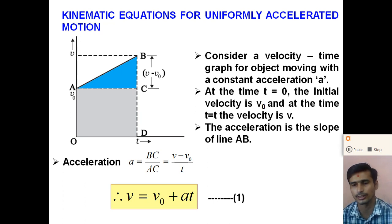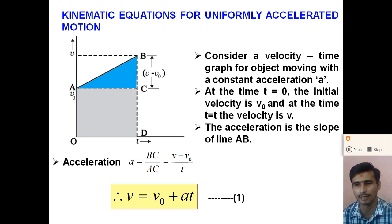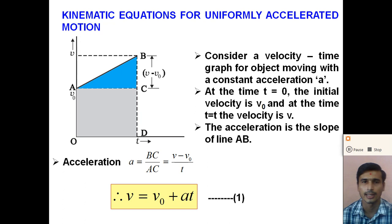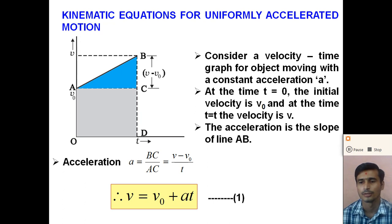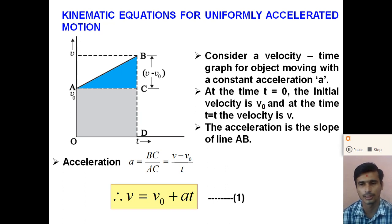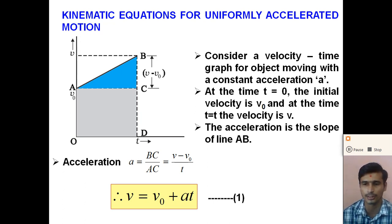For uniformly accelerated motion, we derive the relation between velocity and time, the relation between distance and time, and the relation between velocity and distance. These three equations are called the kinematic equations. First, we derive them using the graphical method with the velocity-time graph, and secondly using the differential calculus method.